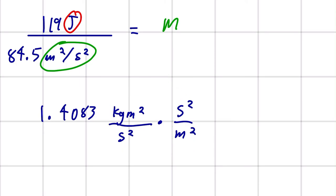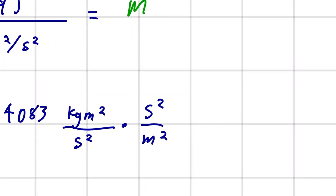So, we're writing out our units like this, and then we can see what cancels out. So, our meter squared cancels out. Our second squared cancels out. All we're left with is kilograms.